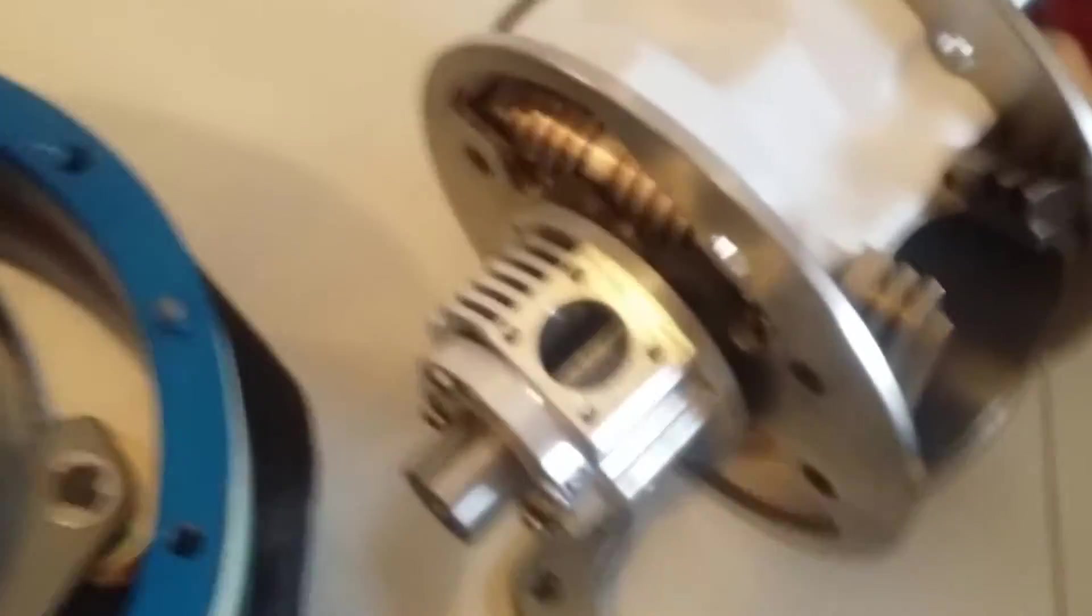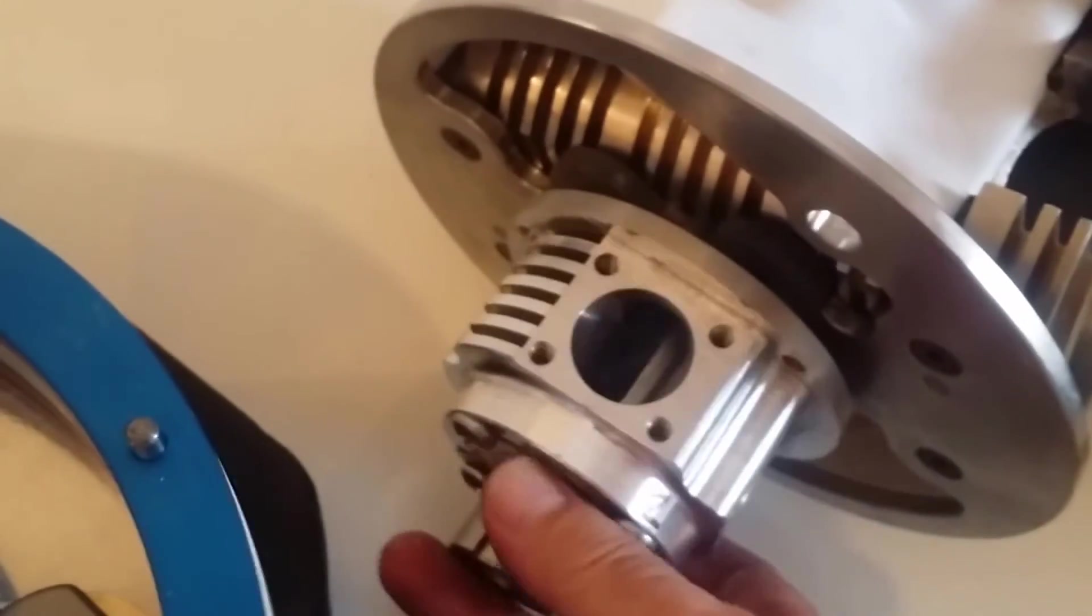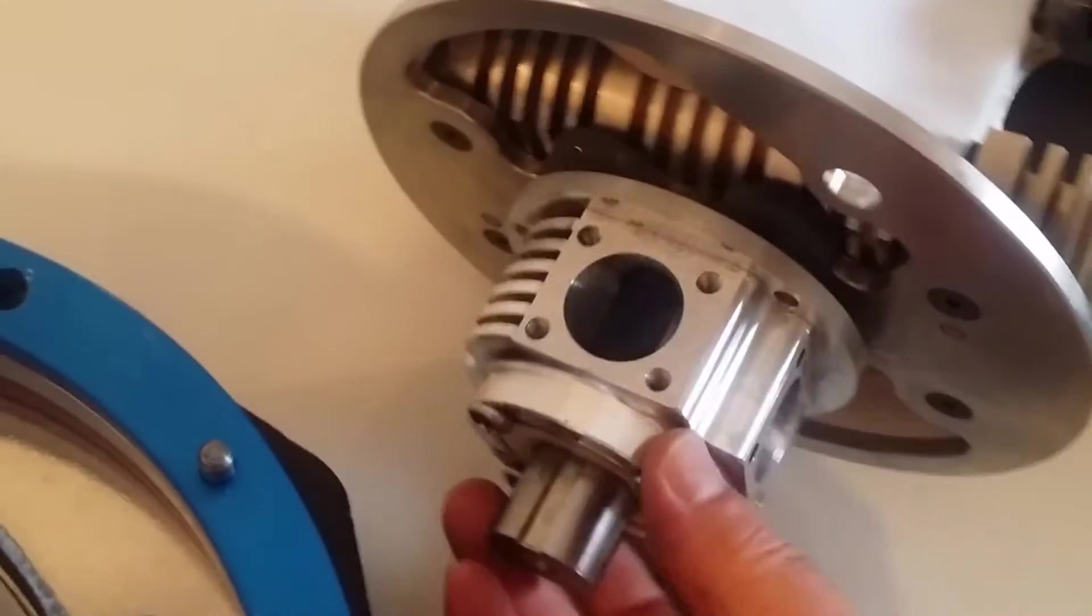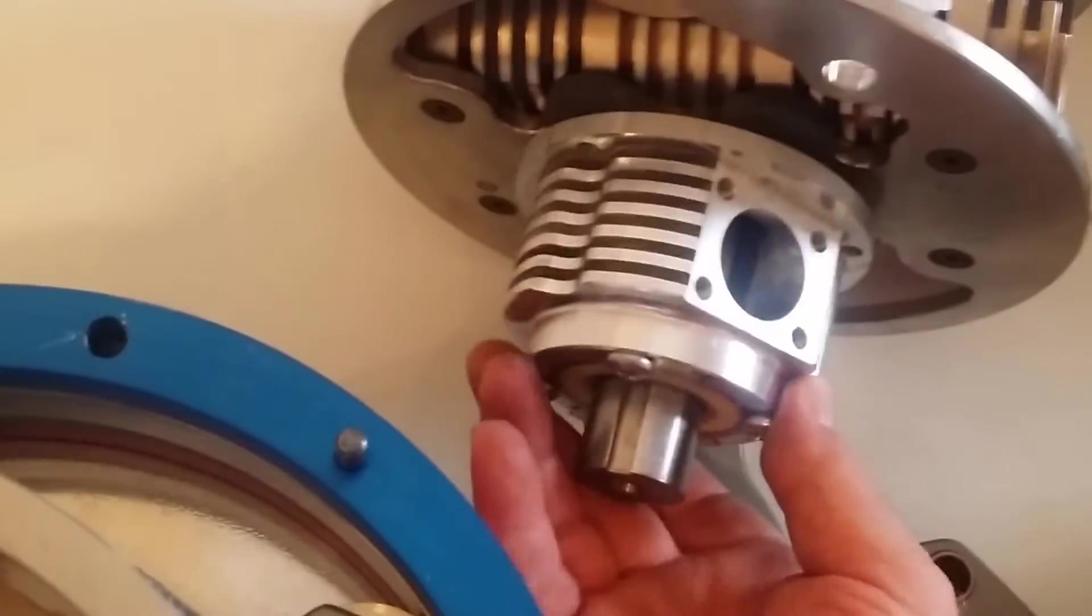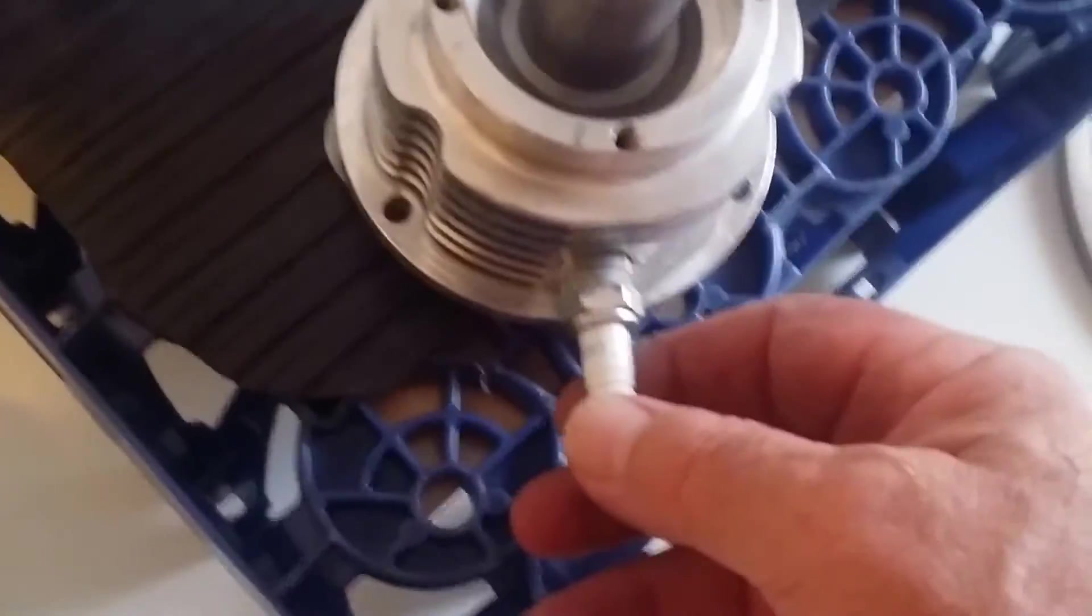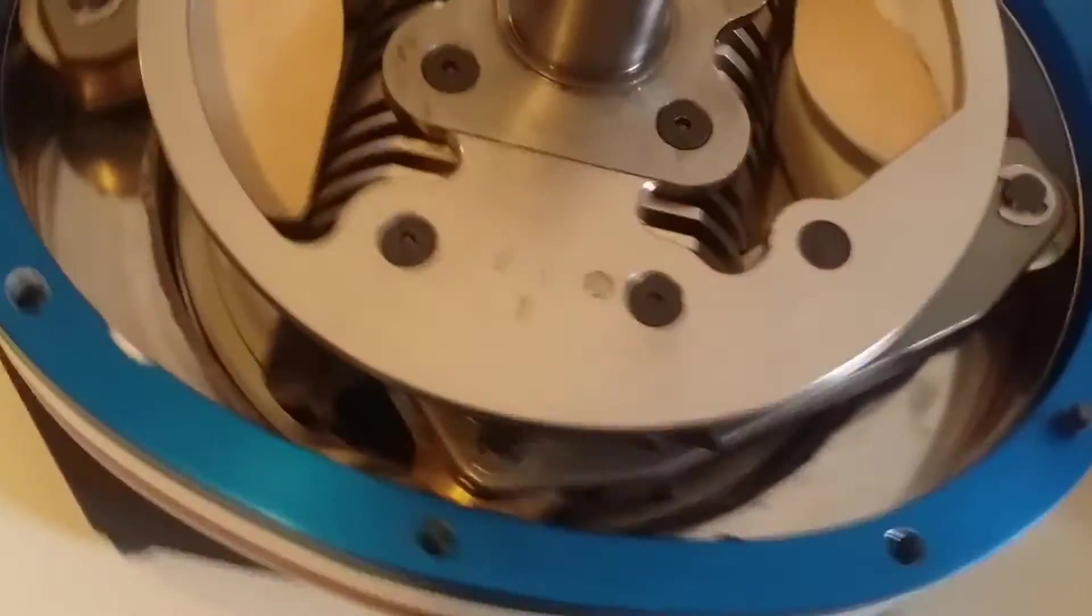You can see there how that port opens and closes. Let me see it better right here. Opening and closing as the rotor is passing by the port. So that's in alignment with the spark plug. You've got the power stroke.